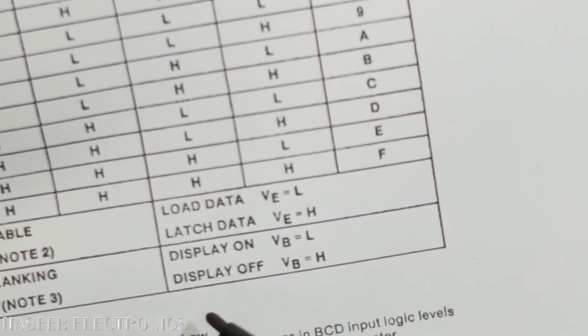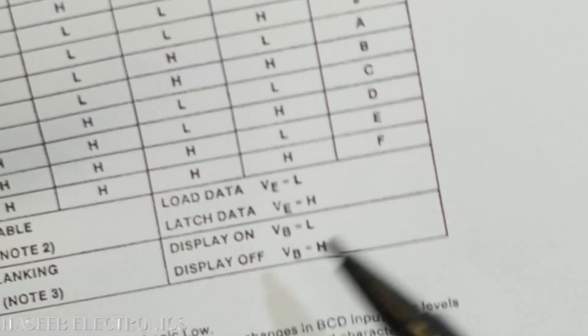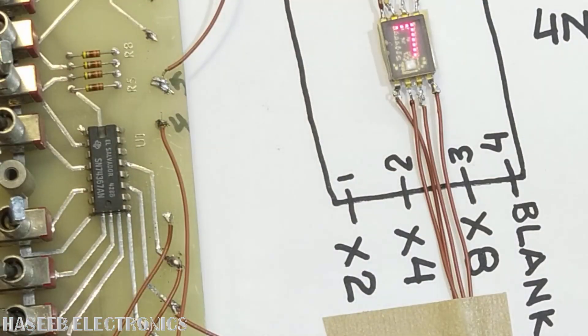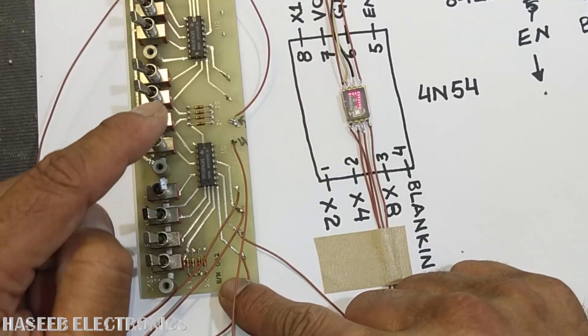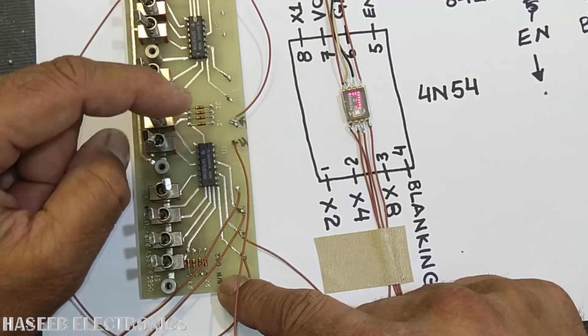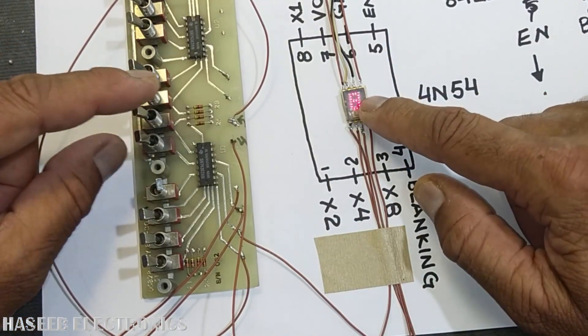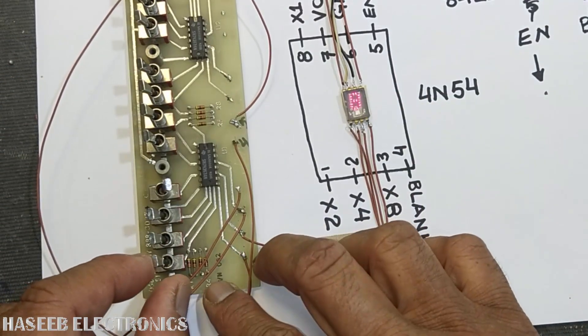Blanking pin must be low so display is on. If blanking is high, the display will turn off. So now we will write 8. To write 8, just we have to put 1000, and enable pin is low. When it is low, it is writing 8. 9.